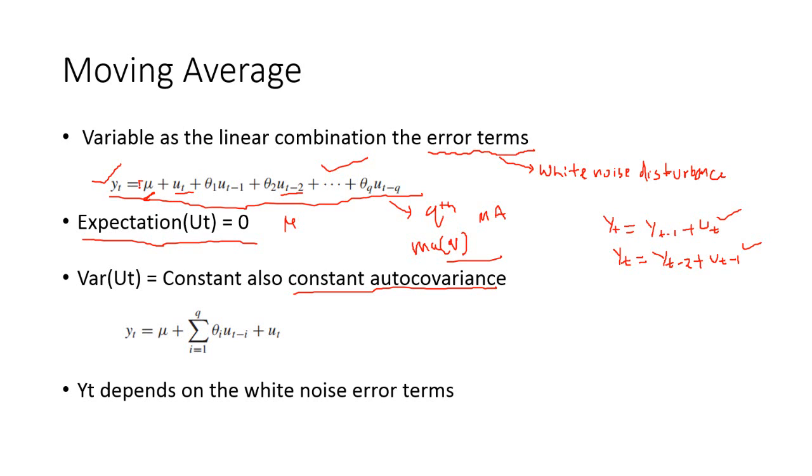If you take expectation, you will put expectation here, here, and so on. So all these terms will be 0. Up to this one, all the terms are going to be 0. Only here, the expectation of mu is going to be only mu. So expectation of yt, which is nothing but the mean, is a constant mu.